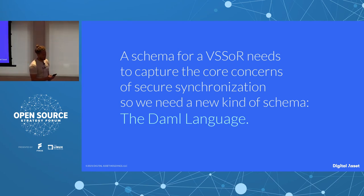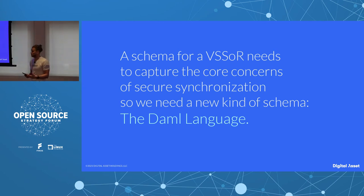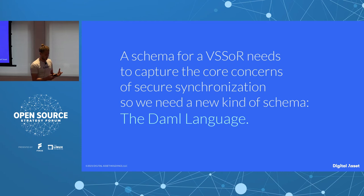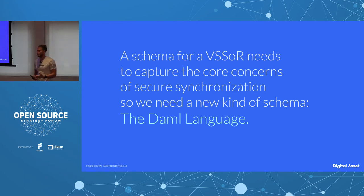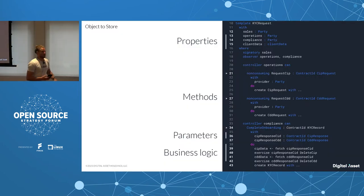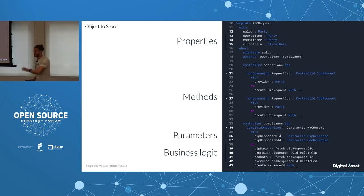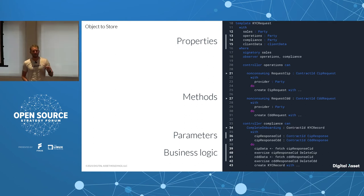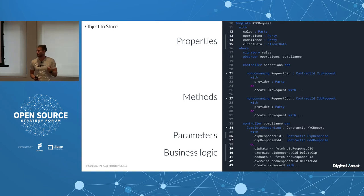To achieve this, you need a schema where parties can agree on the rules. We call this the DAML language — and it handles data permissions, ownership, and privacy. I'm showing code here not to explain every detail, but to illustrate how simple it is to write DAML code to create applications with parties and permissions built in at the core.